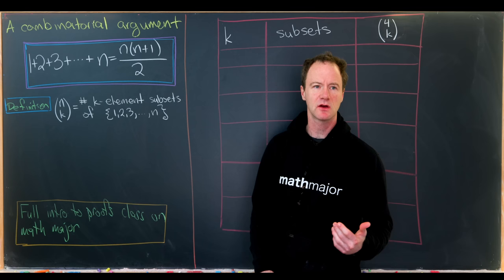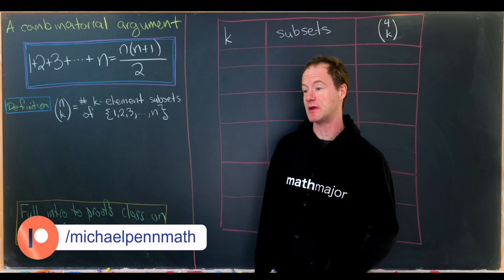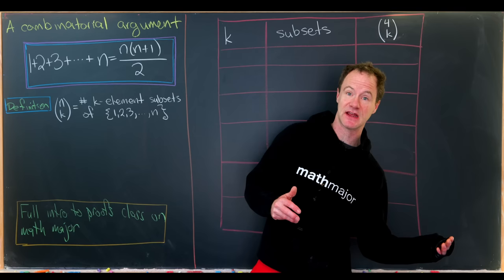Today we're going to look at what I think is a really interesting way to prove a very classic result — the closed form for the nth triangular number. We're not going to do this with induction. We're going to use something called a combinatorial argument, where we take a certain set of objects and count it two ways, showing that those two ways give us the left-hand side and right-hand side of an identity respectively.